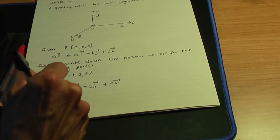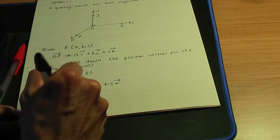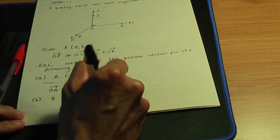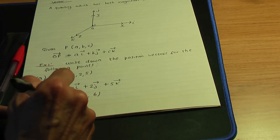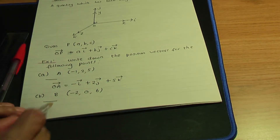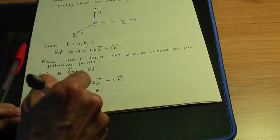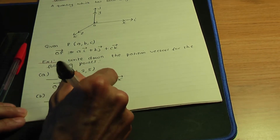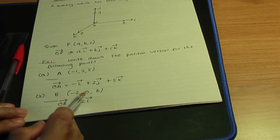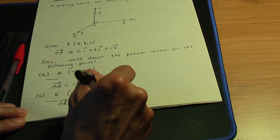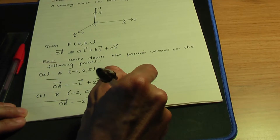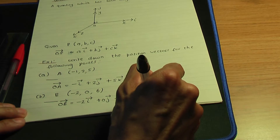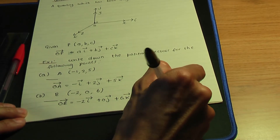In part b, if I have a point B with coordinates minus two, zero and six, then the position vector OB equals minus two i, plus zero j, plus six k. You could ignore the zero j and write it simply as minus two i plus six k.